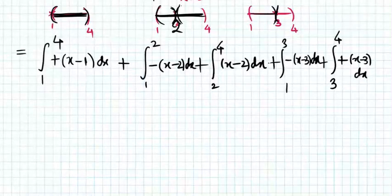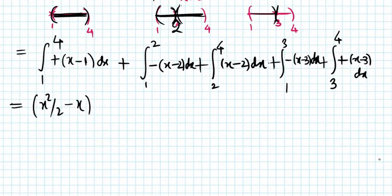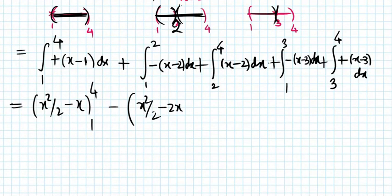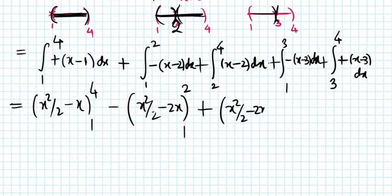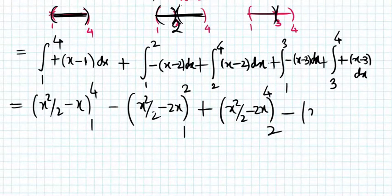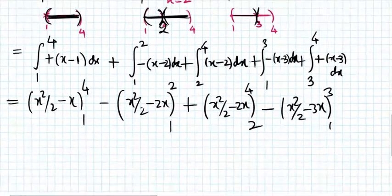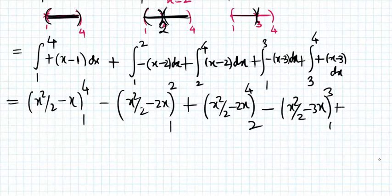Now it has become simple to calculate. The first integral gives x²/2 minus x with limits 1 to 4, plus for the second part we get minus (x²/2 minus 2x) from 1 to 2, plus (x²/2 minus 2x) from 2 to 4, plus minus (x²/2 minus 3x) from 1 to 3, and finally (x²/2 minus 3x) from 3 to 4.